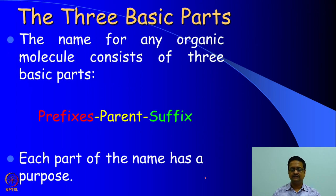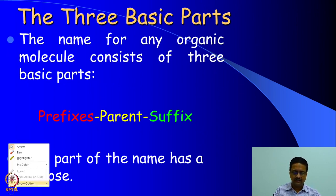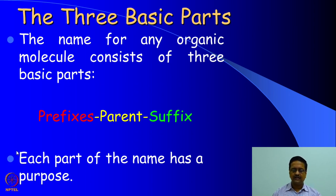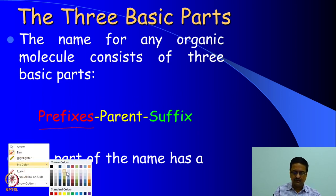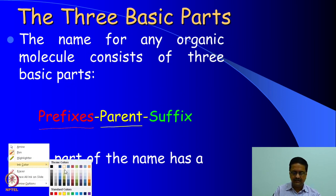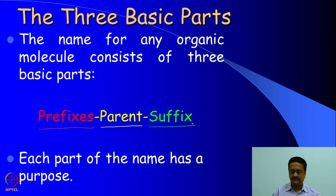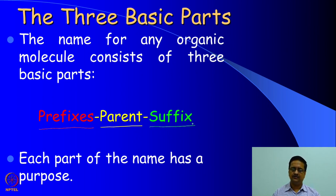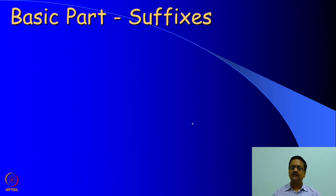The name of a compound has three basic parts. The first part is called the prefix or prefixes. The second part is called the parent. The third part comes from the family name — that is, the suffix. The suffix identifies the family, the parent indicates the number of carbon atoms present in the molecule, and the prefix identifies other substitutions present in the molecule.